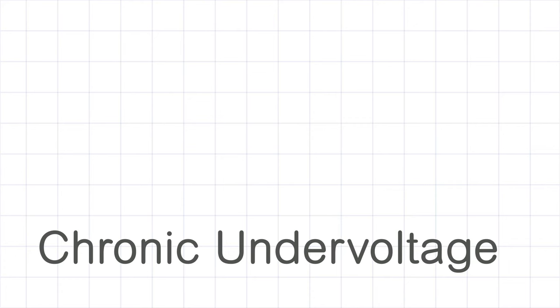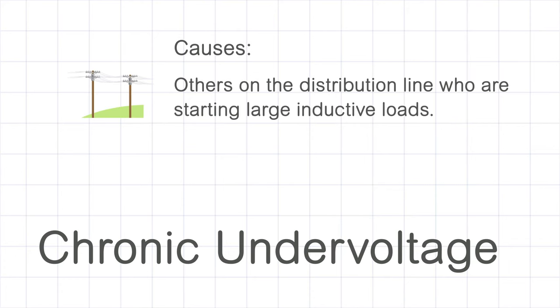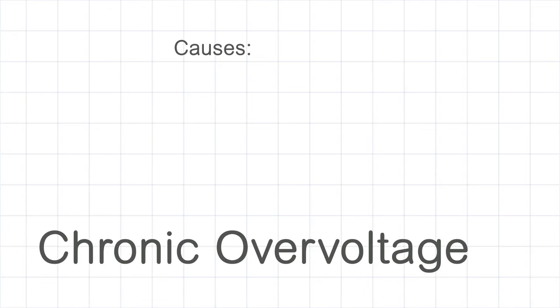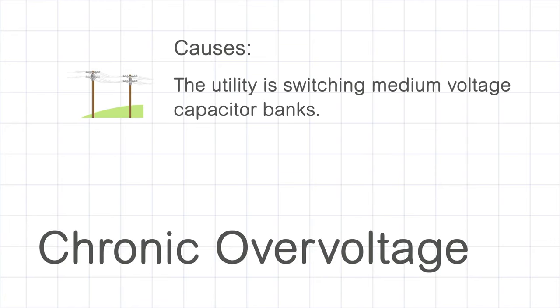Chronic undervoltage can happen because the consumer is at the end of a distribution line. A neighboring customer may be starting a large inductive load. A consumer may cause the sag with their own industrial process. Chronic overvoltage normally happens because the utility is switching capacitor banks on the medium voltage network.